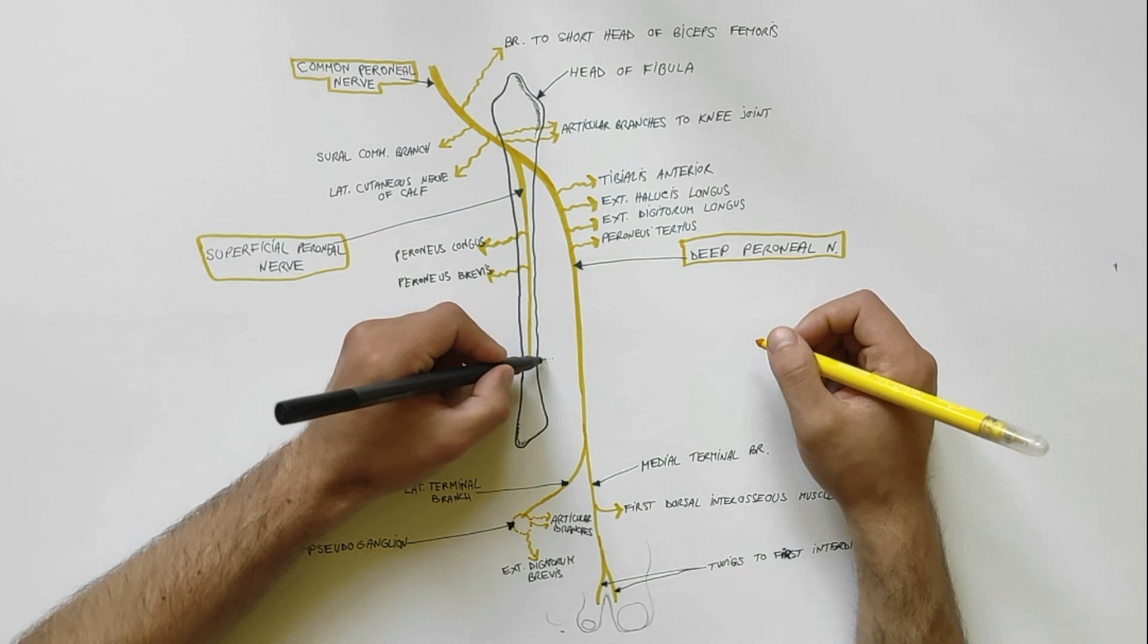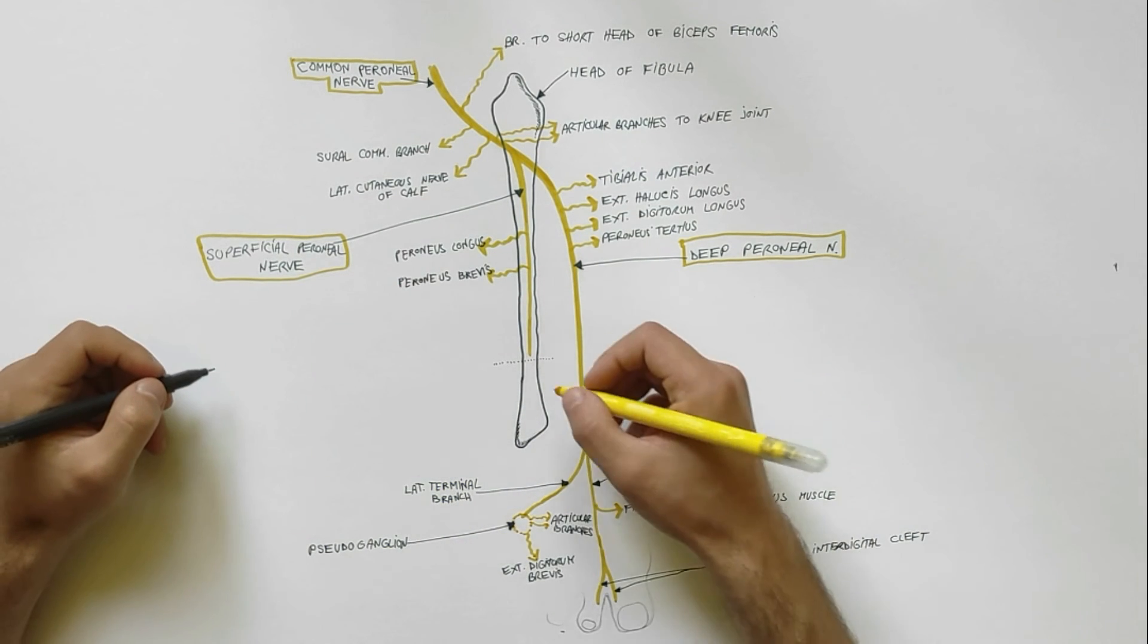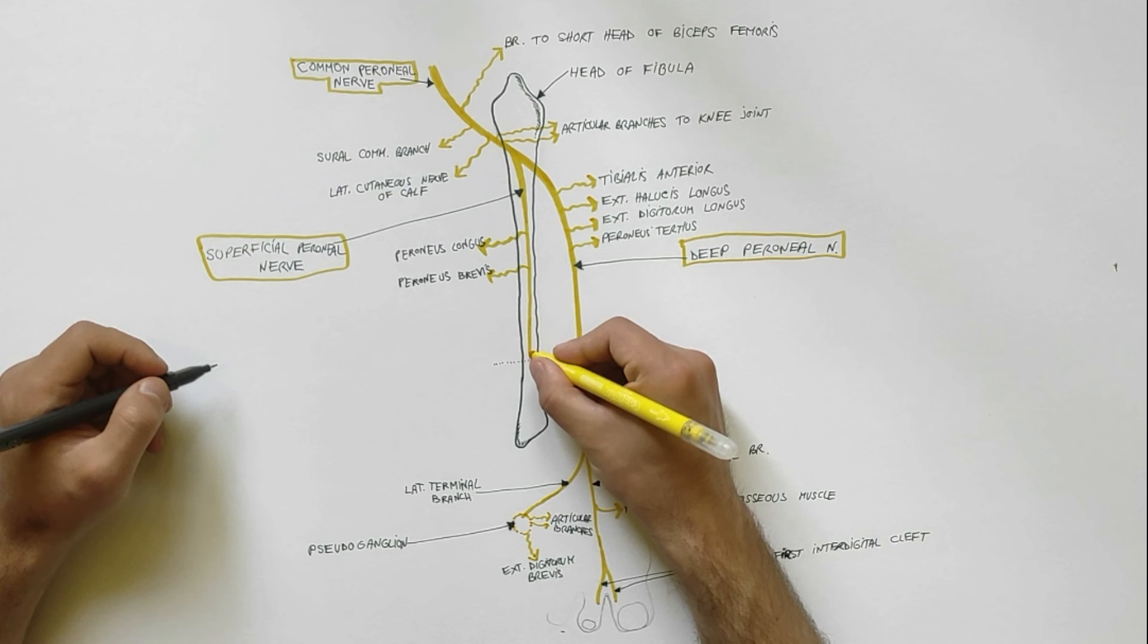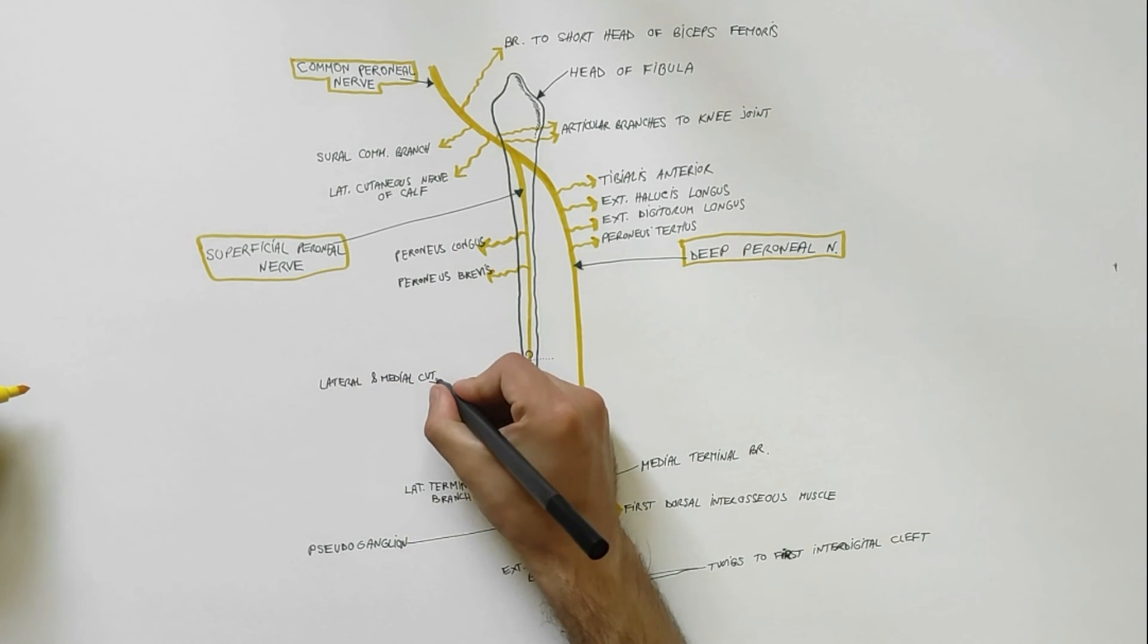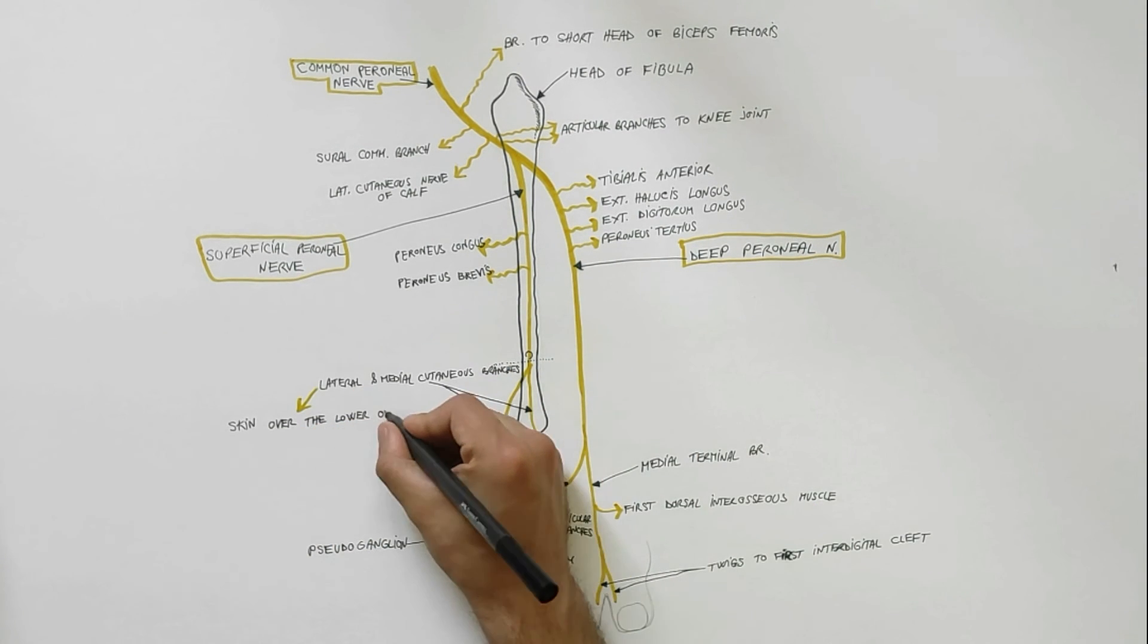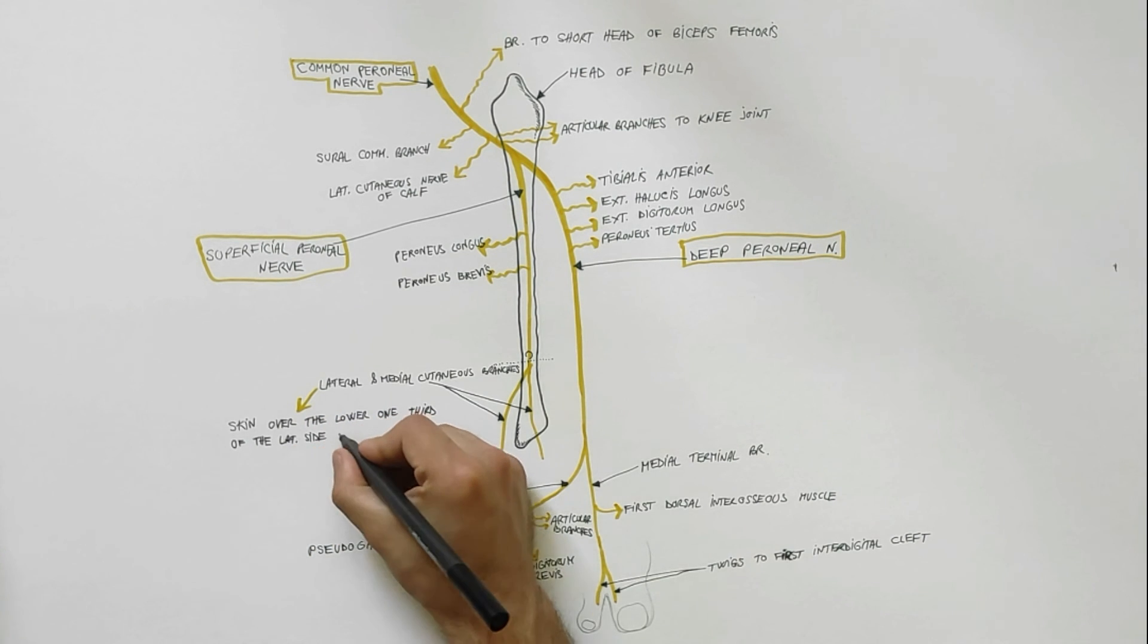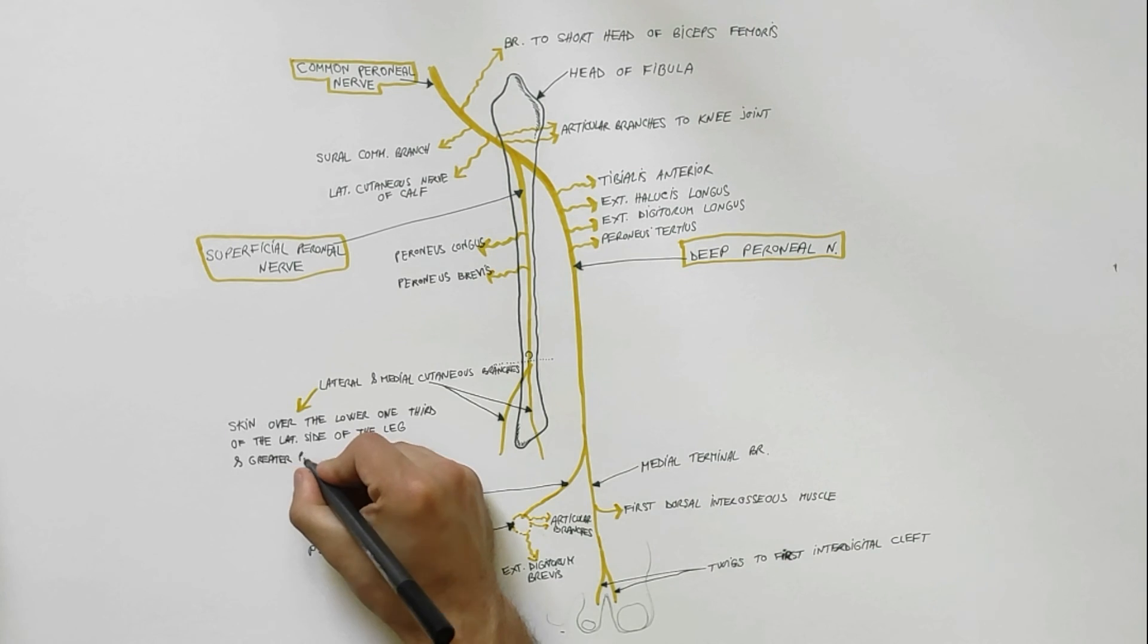It becomes superficial at the junction of upper two-thirds and lower one-third of the leg by piercing the deep fascia and divides into a medial cutaneous branch and a lateral cutaneous branch. These two terminal cutaneous branches supply the skin over the lower one-third of the lateral side of the leg and greater part of the dorsum of the foot.